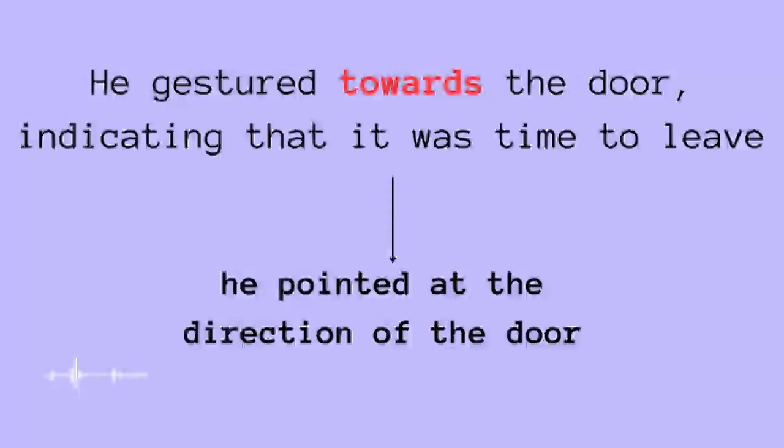Alright, let's have a look at another example to understand the idea much better. He gestured towards the door indicating that it was time to leave, meaning that he was pointing at the direction of the door, like maybe his attention is basically directed towards the door just to indicate that it is time for him to stand up and leave, something like that.